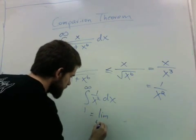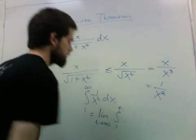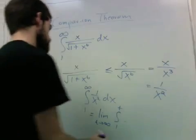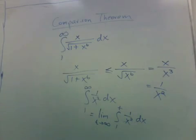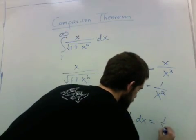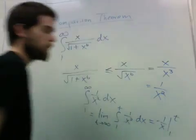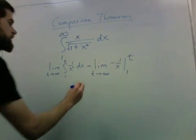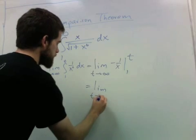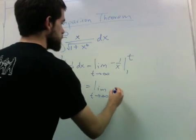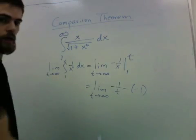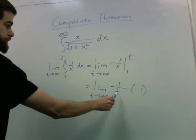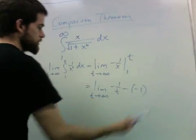It equals the limit as t goes to infinity of the integral from 1 to t of this. And we can just evaluate this. We'll get negative 1 over x from 1 to t. And this is just the limit as t goes to infinity of negative 1 over t minus negative 1. As t goes to infinity, this goes to 0, and this goes to 1.